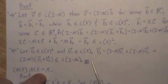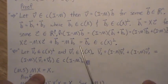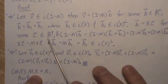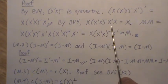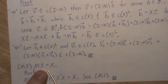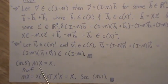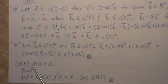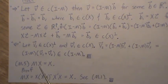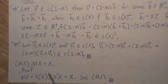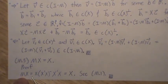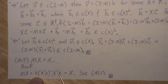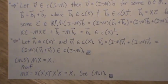To reiterate: MX = X. M projects vectors down into the column space of X, but if they already live in the column space of X, it projects them back onto themselves. So M times X is just X — see property M1.